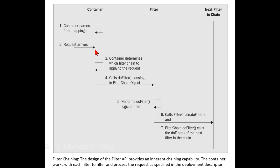Two: the request arrives accessing the resource in the application. Three: the container determines the filter chain that will be applied to the request. The container invokes the doFilter method of the first filter of the chain, passing the request and response along with the filter chain object reference. The container loads the filter chain information into the filter chain object that is passed.